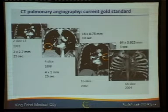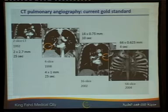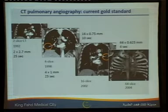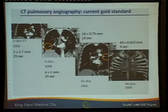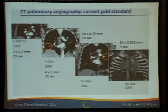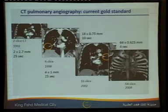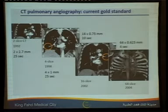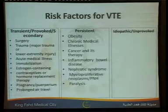Radiology is also advancing. Previously we used to have two-slice CT; nowadays we have 64-slice, and recently 128-slice, which is very accurate and can mimic conventional angiogram. This CT angiogram with 64-slice looks like a conventional angiogram, and 128-slice will be even more detailed.